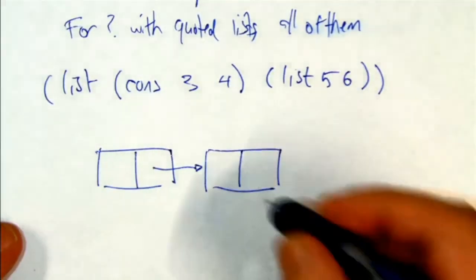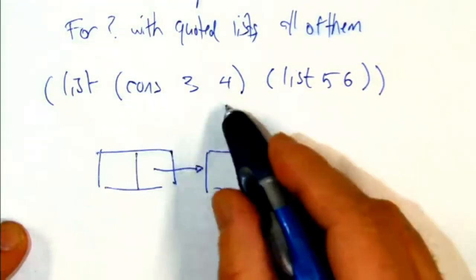That's the list of two things. There, now it is. The first thing is this cons cell.